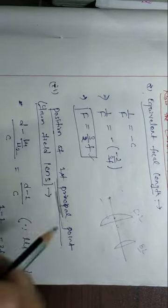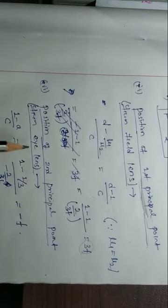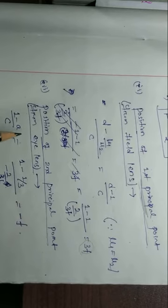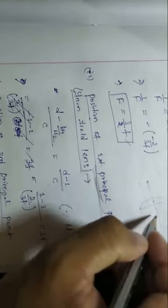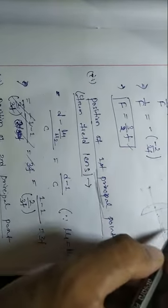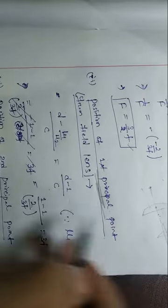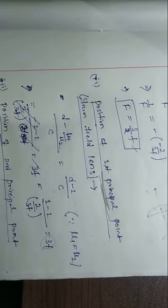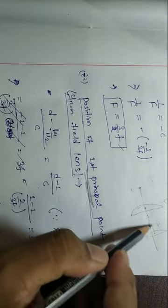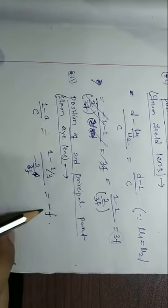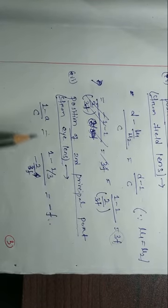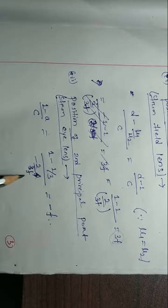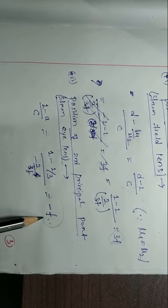The position of the second principal point from the eye lens: moving a distance of −f towards the left from the eye lens. Using the formula (1 − A)/C = (1 − 1/3)/(−2/3f) = −f. So the second principal point is at distance −f from the eye lens.